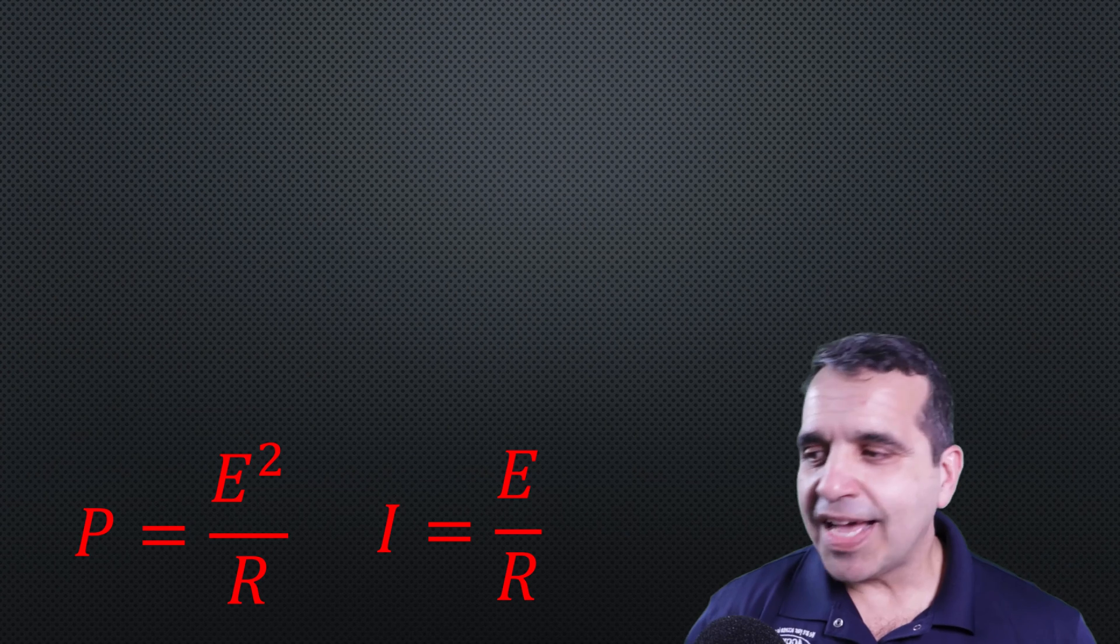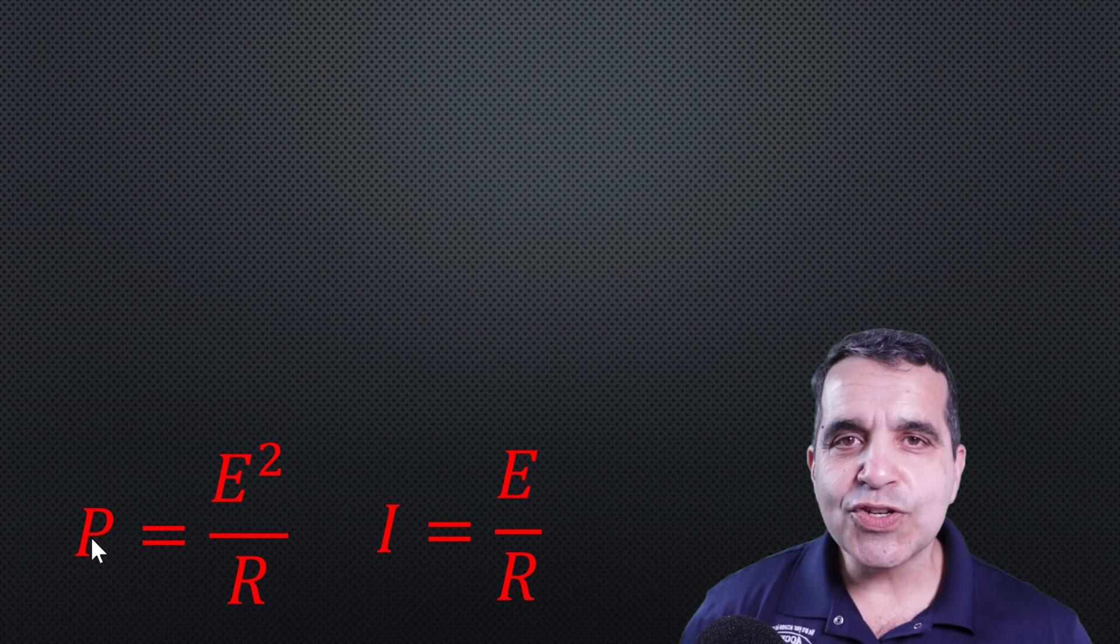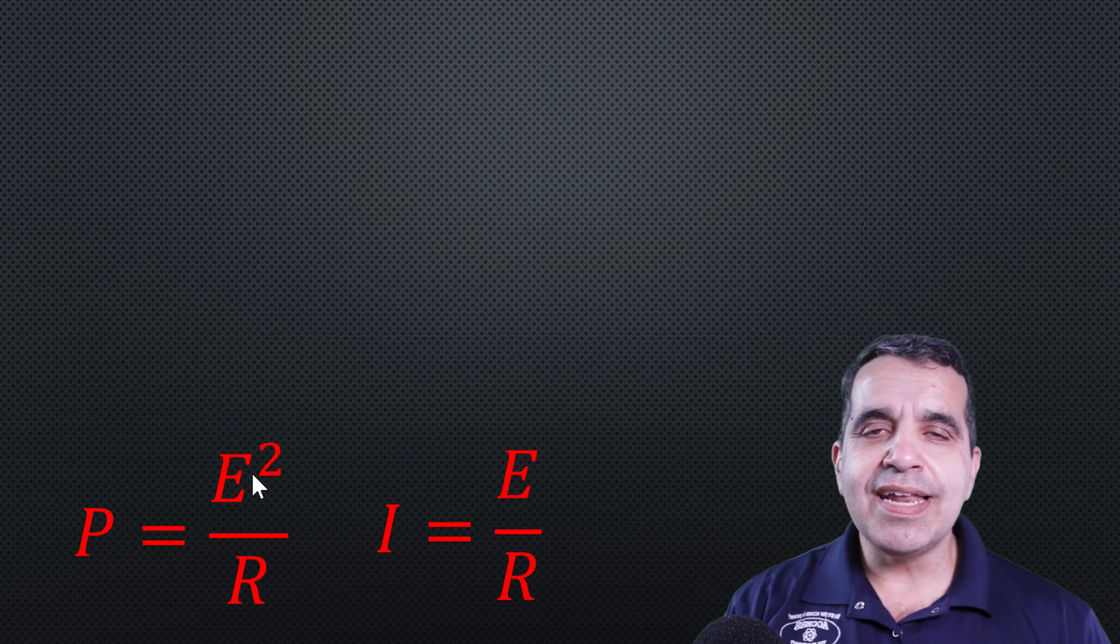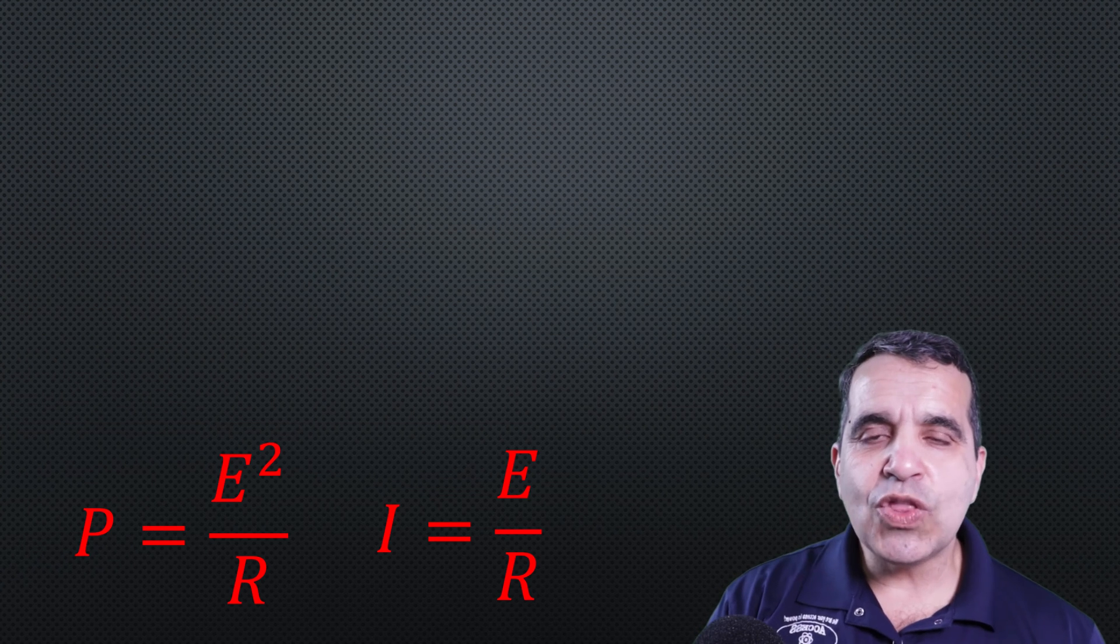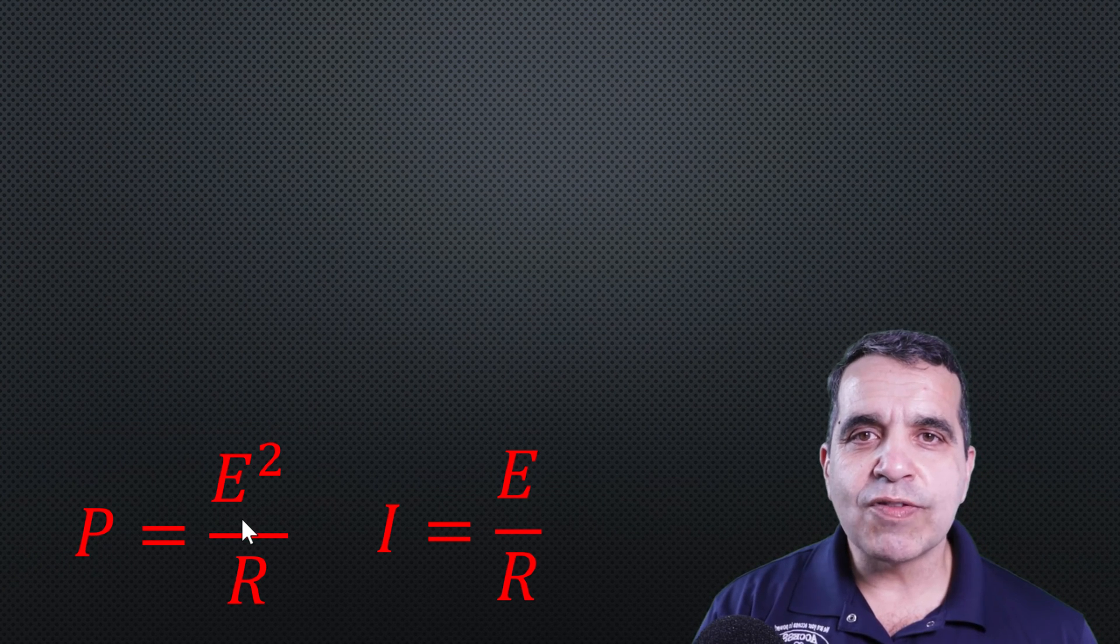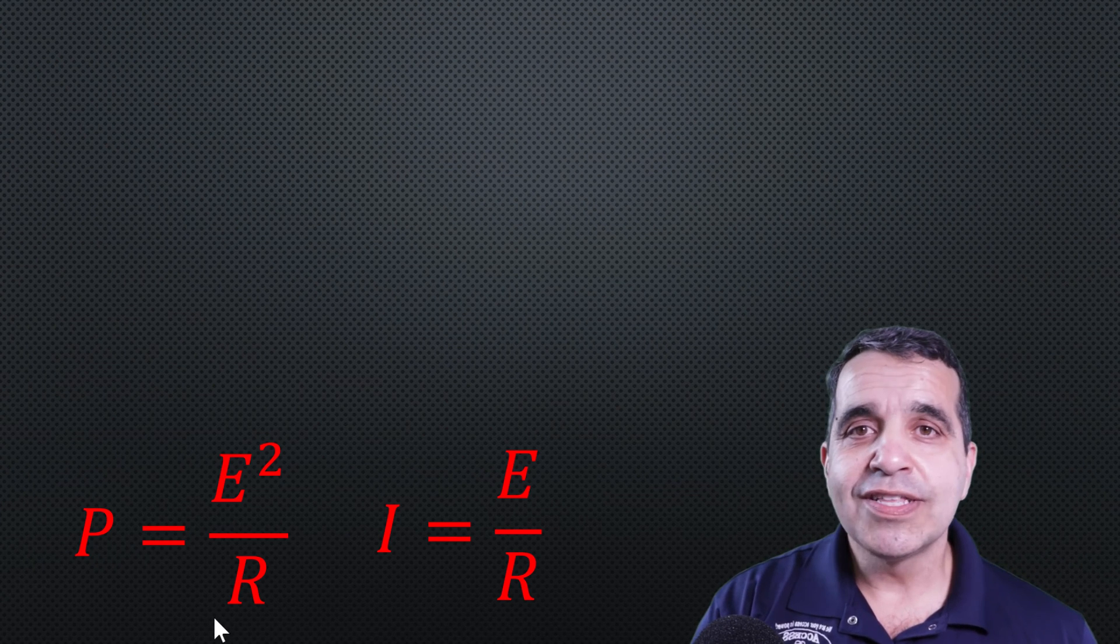So here, if you look at my screen, I have here power is directly proportional to the square of the voltage. And in order for me to explain that, I want to take you through a couple of things. So power is directly proportional to the square of the voltage. It's also inversely proportional to the resistance.